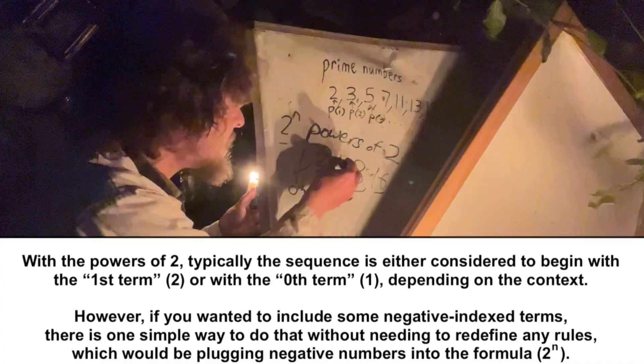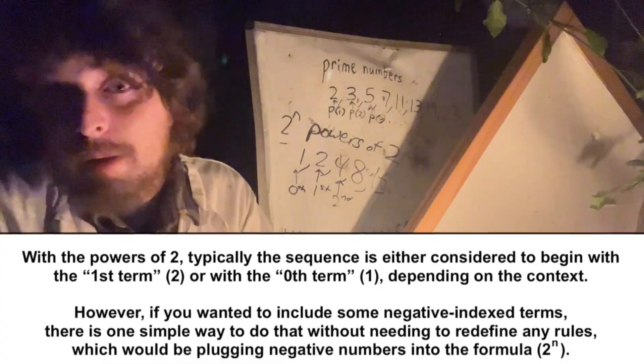Second term, because it's two to the second power. But what about negative indices?